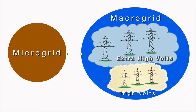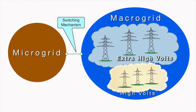Connection of the two grids is via a switching mechanism at the point of common coupling, enabling the microgrid to be switched from island mode to grid-connected mode. Having the ability to connect to the macrogrid addresses issues such as capacity and power quality, whereas switching to island mode can isolate connected loads from voltage and frequency issues occurring on the macrogrid.